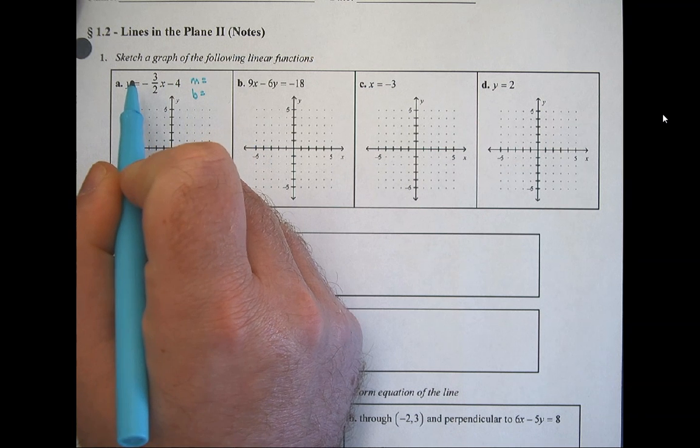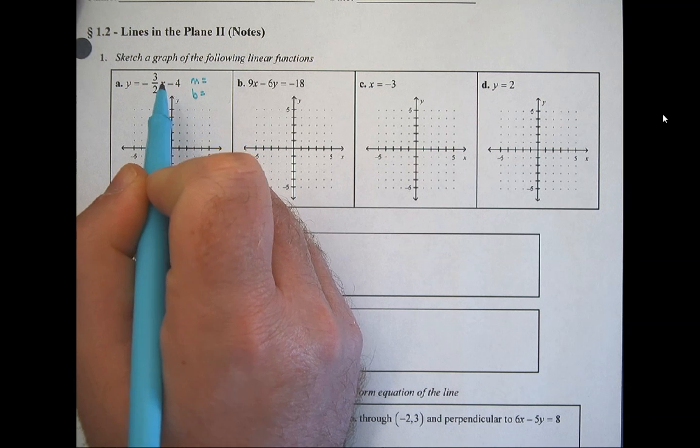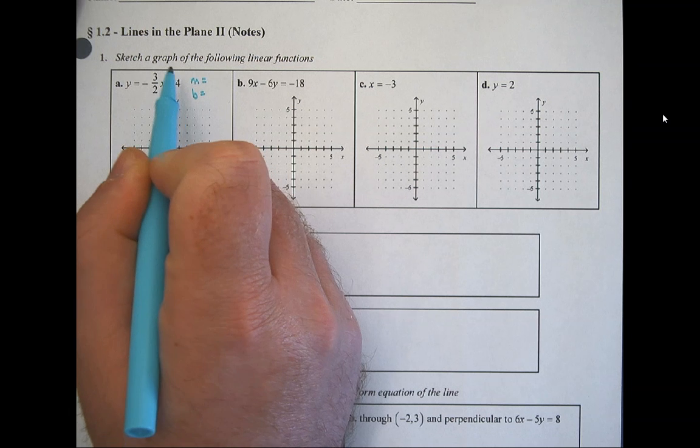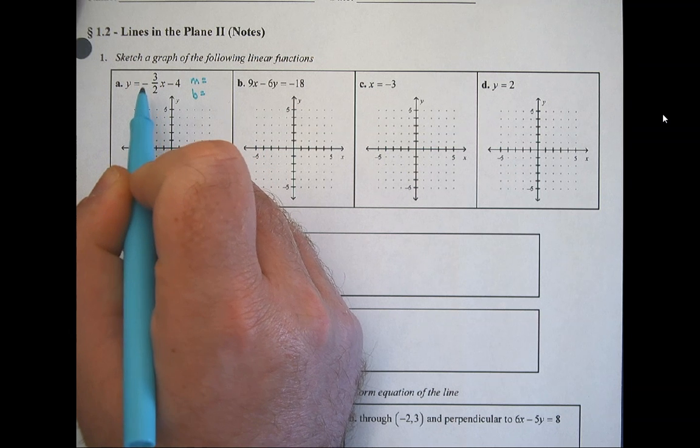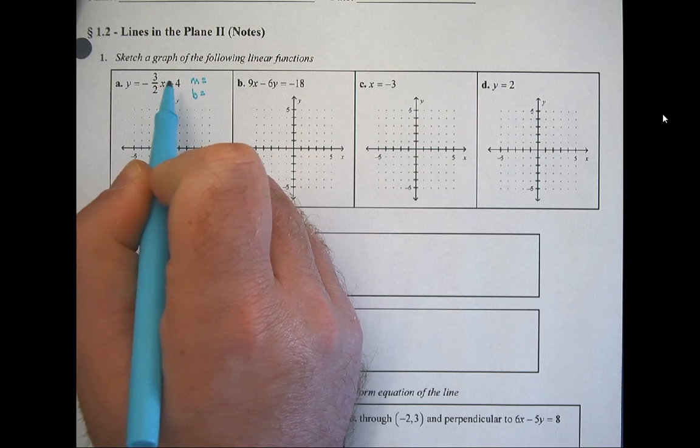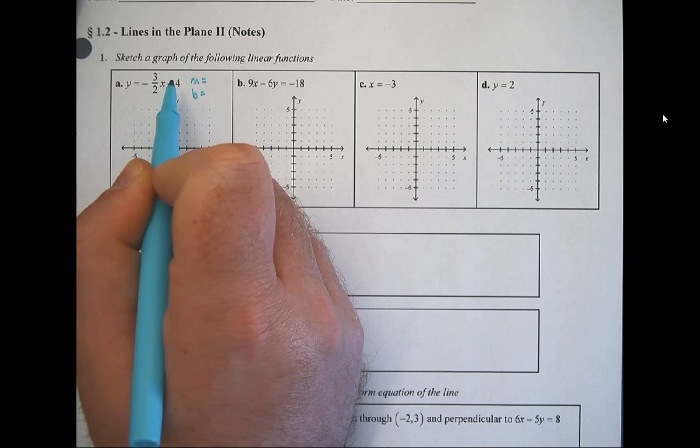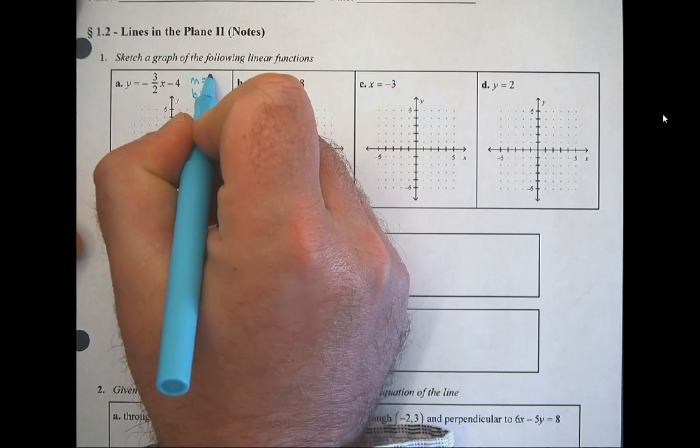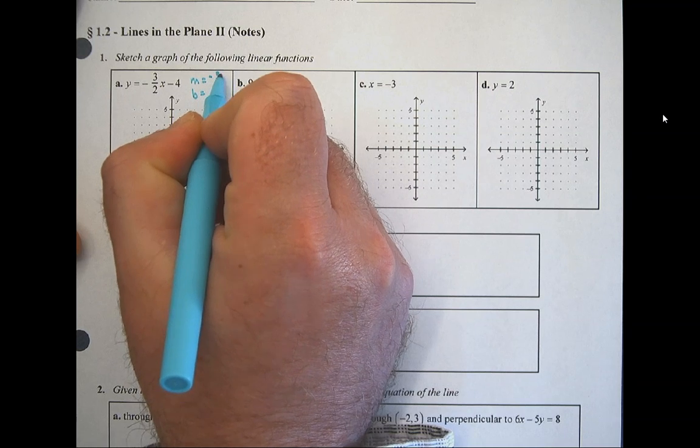But sometimes the b could be put out front. This would happen especially if this was, let's say, a positive 4. They'll put that 4 in front because they don't usually like to have negatives floating out front if they can avoid it. In this case, either way you arrange it, you're going to have a negative out front. So this number out front is our slope, negative 3 halves.